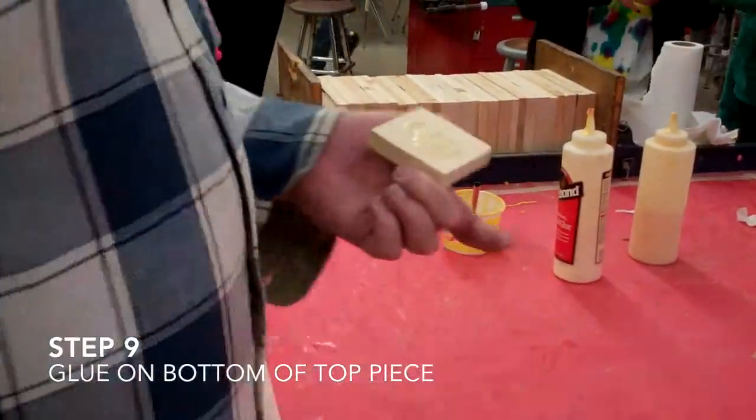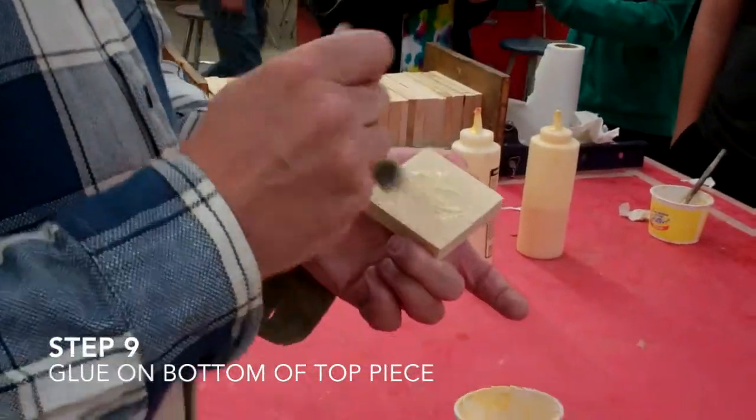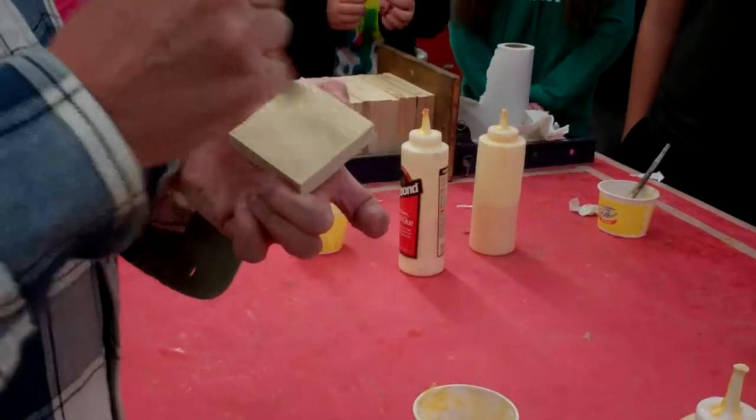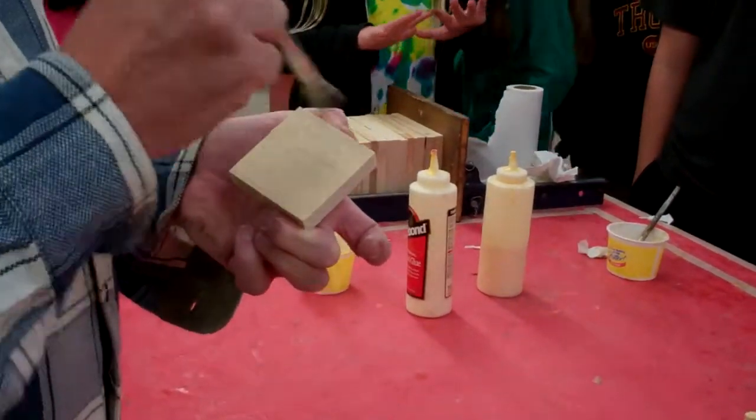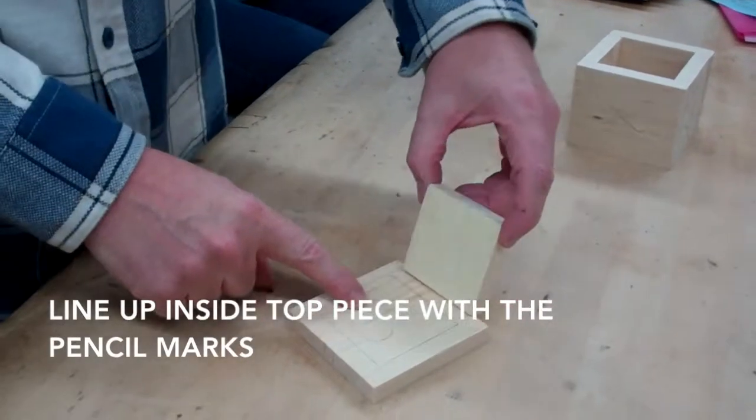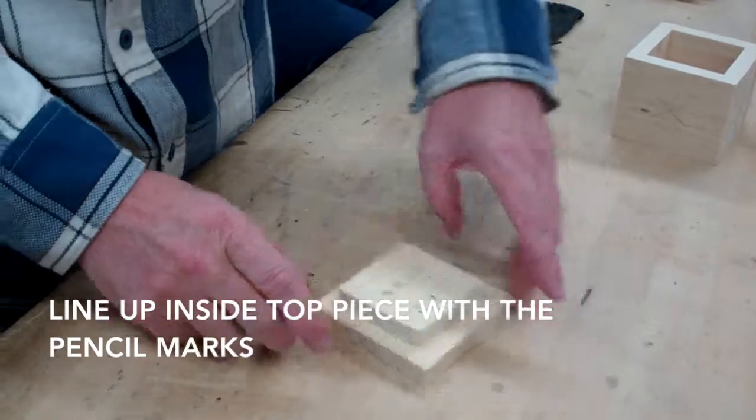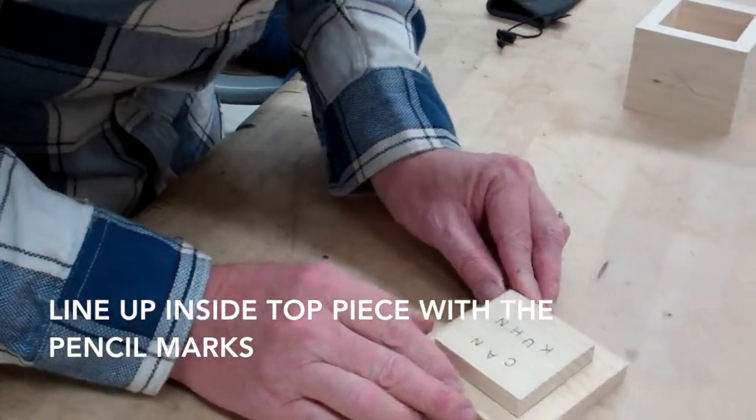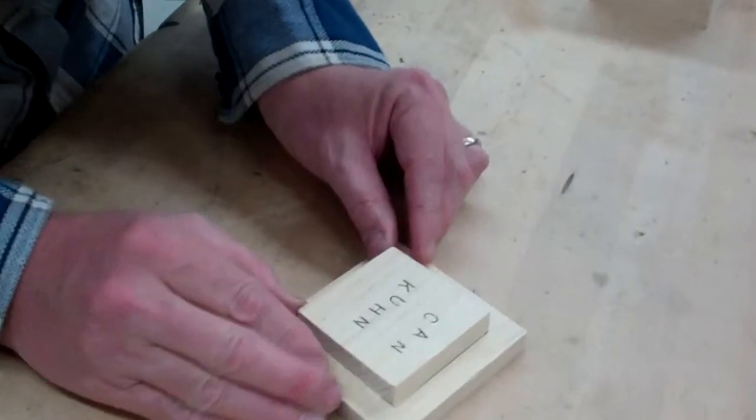A little glue. You want to glue it on each side, and then you want to go around and make sure that covers the line all the way around.